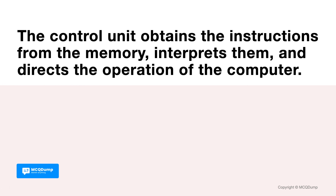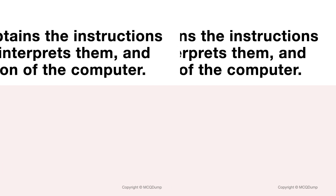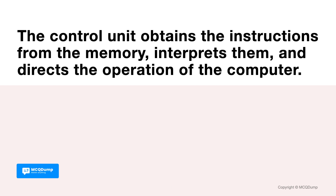The Control Unit obtains the instructions from the memory, interprets them, and directs the operation of the computer. True or false? It is true. The Control Unit obtains the instructions from the memory, interprets them, and directs the operation of the computer.